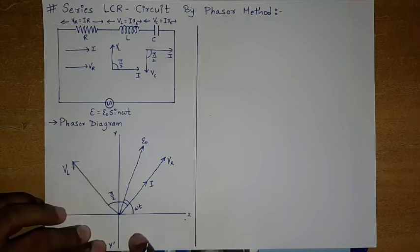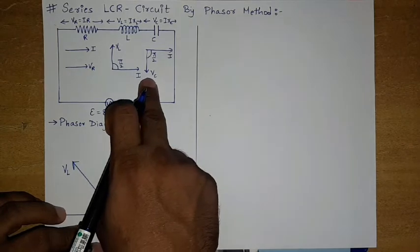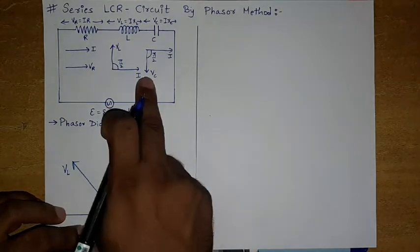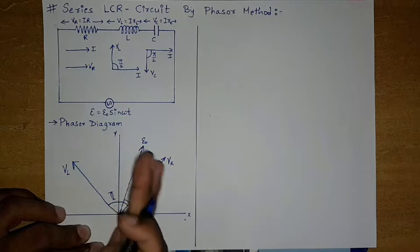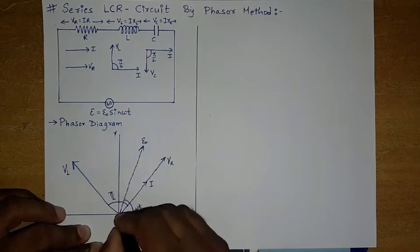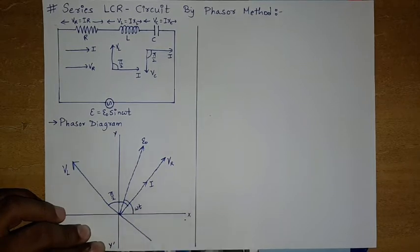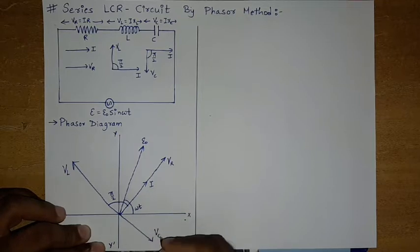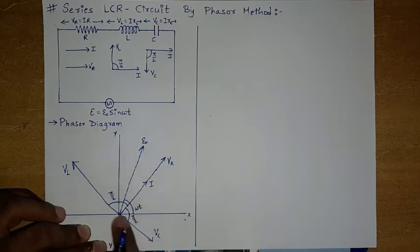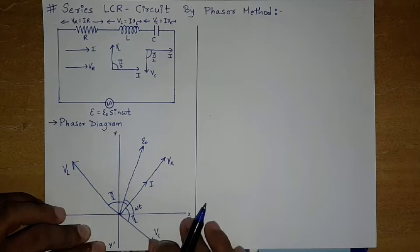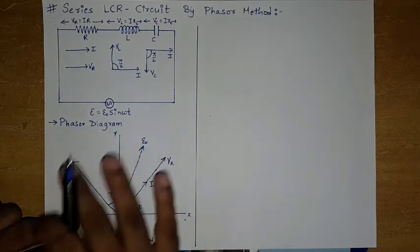For the capacitor, voltage VC lags behind current by π/2. So if the current vector is here, VC is drawn behind the current vector at an angle of π/2. This completes the phasor diagram for the series LCR circuit.